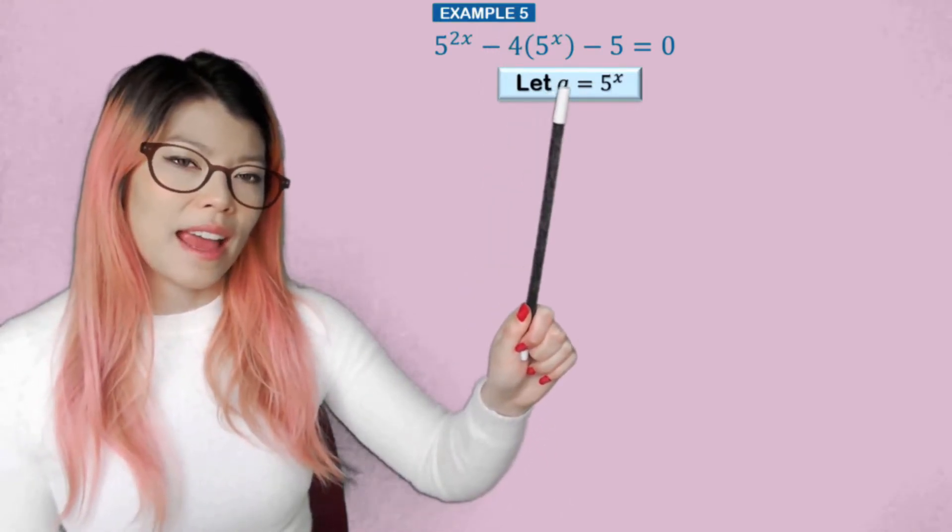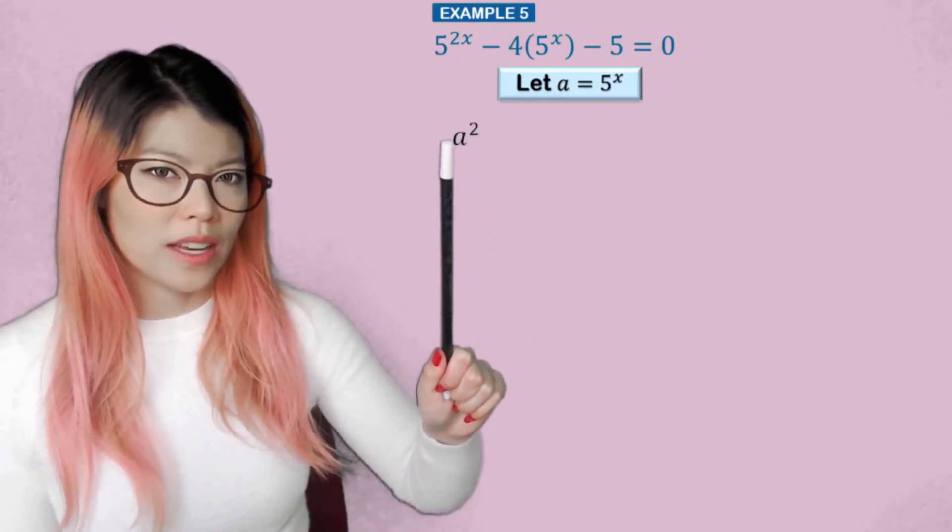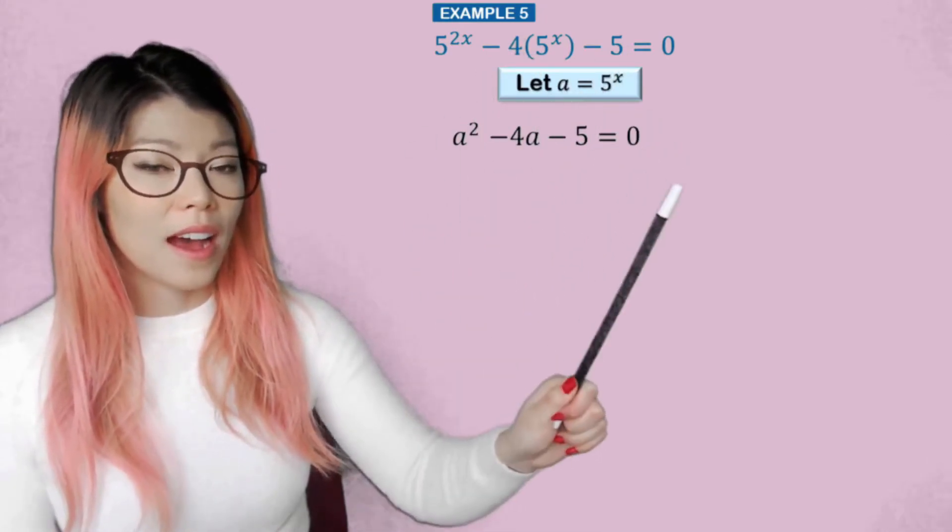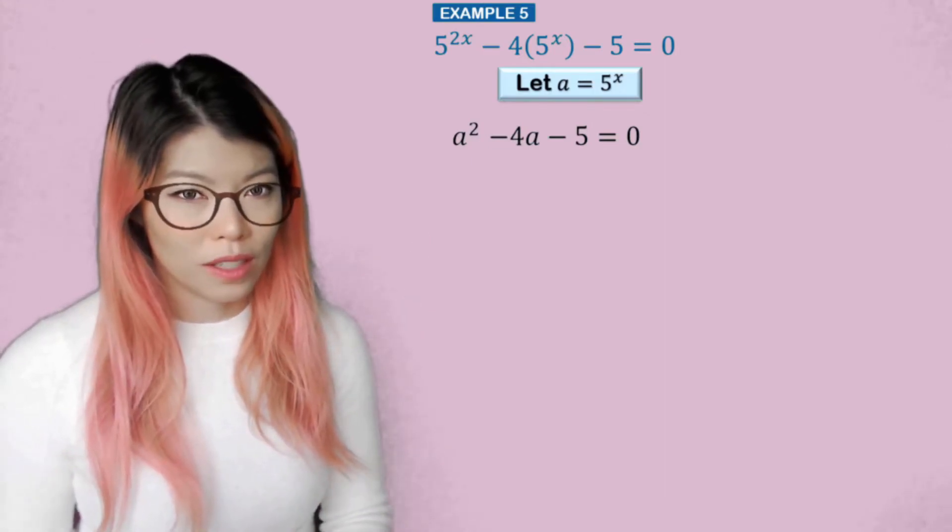So if we had a equals 5^x, then that would be written as a squared. That would be written as minus 4a, and that's just minus 5. And now we can solve for a by using quadratics.